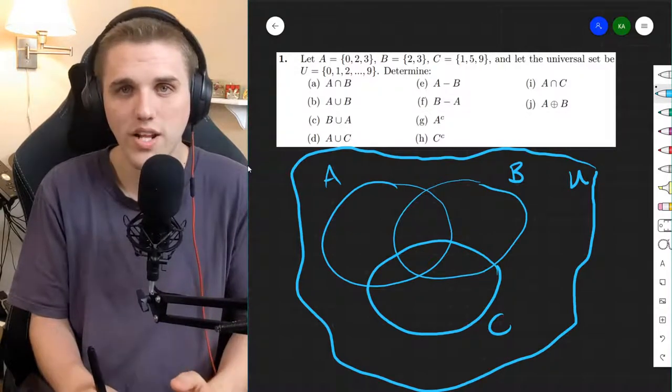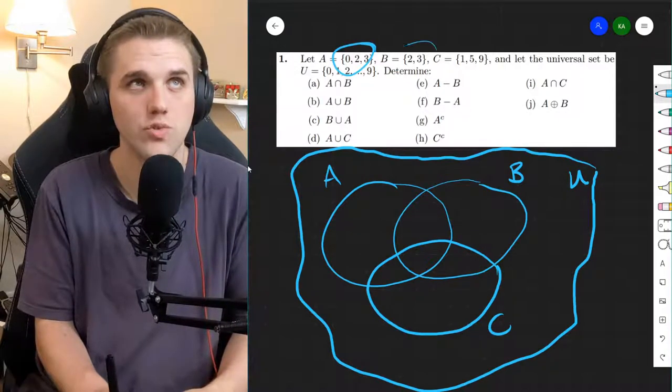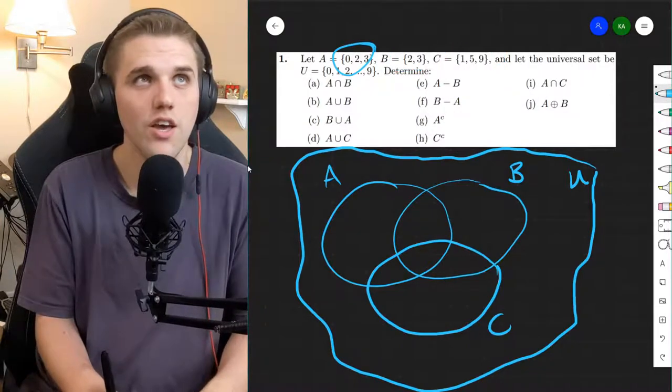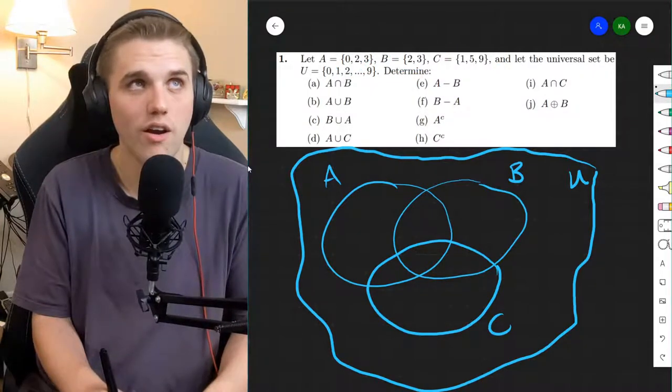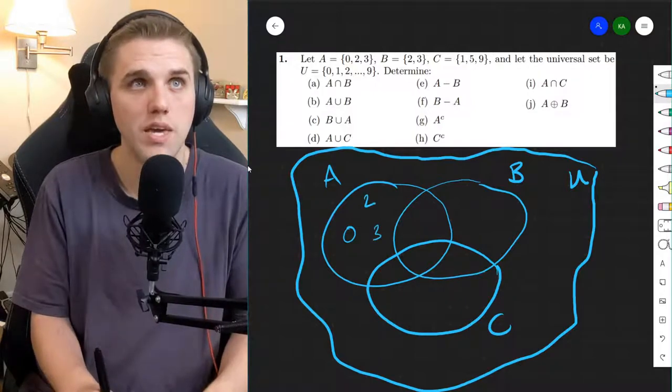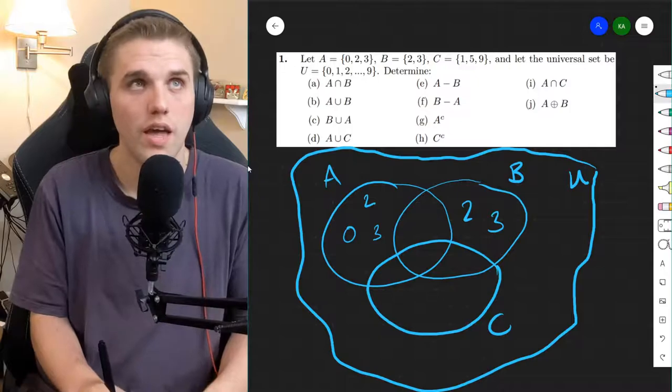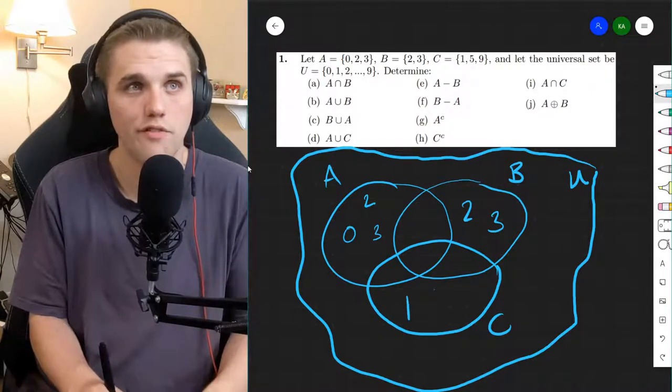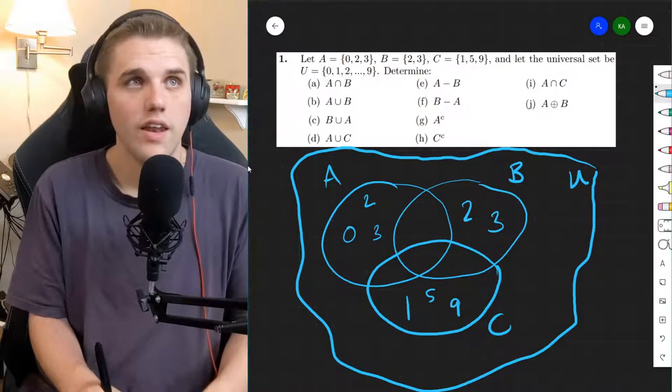Okay, so now if you want to set up a Venn diagram using these three sets for A, B, and C, you can just write in where A is 0, 2, and 3, B is 2 and 3, and I'll talk about this in a moment, and C is 1, 5, and 9.